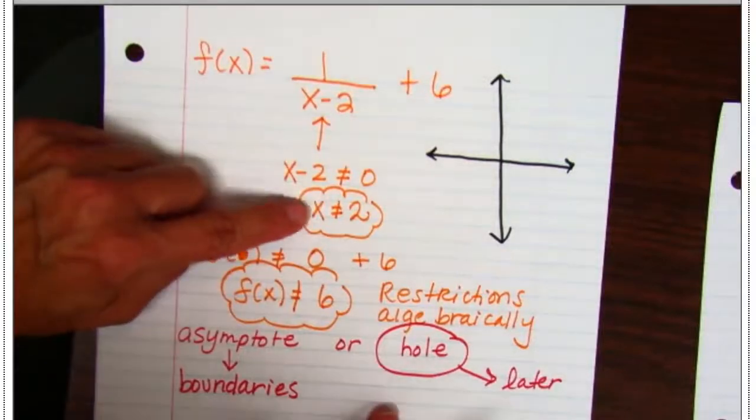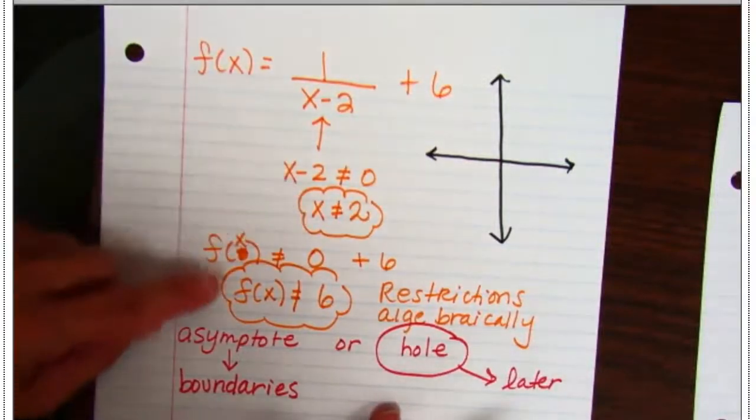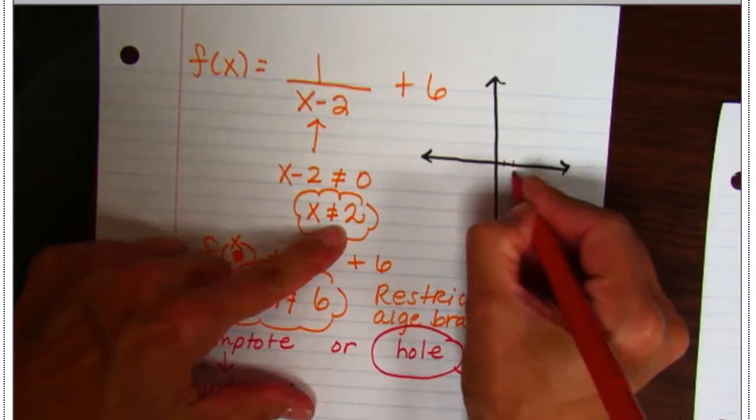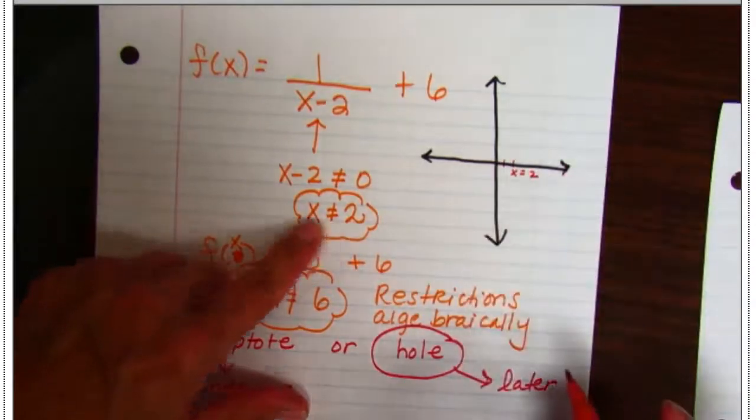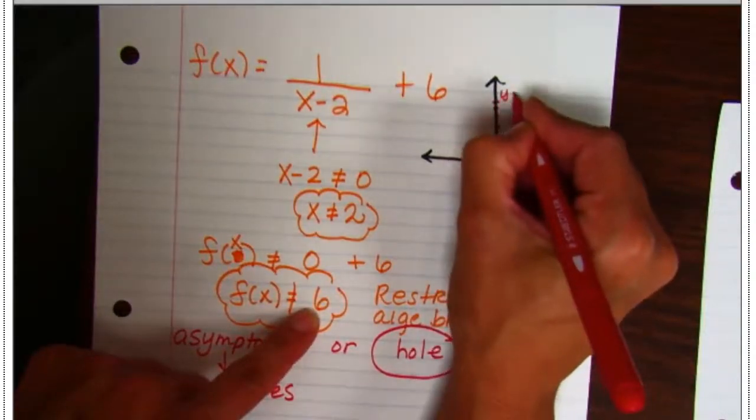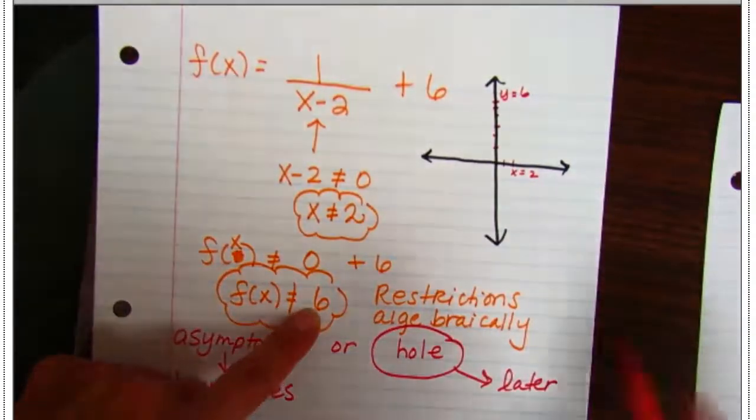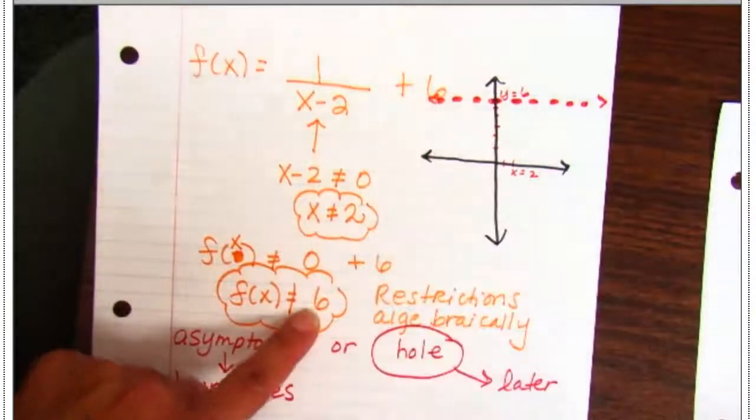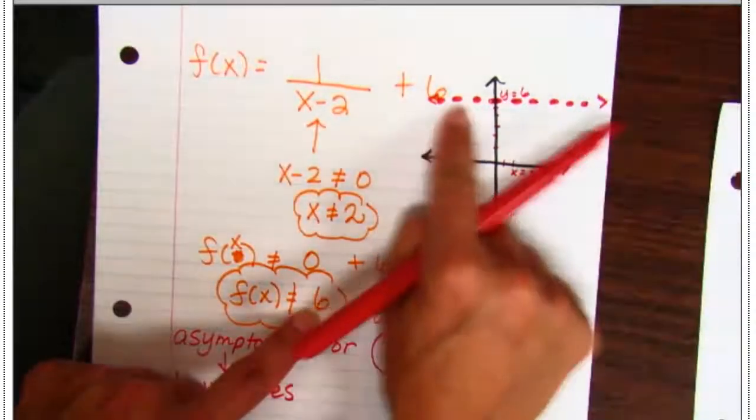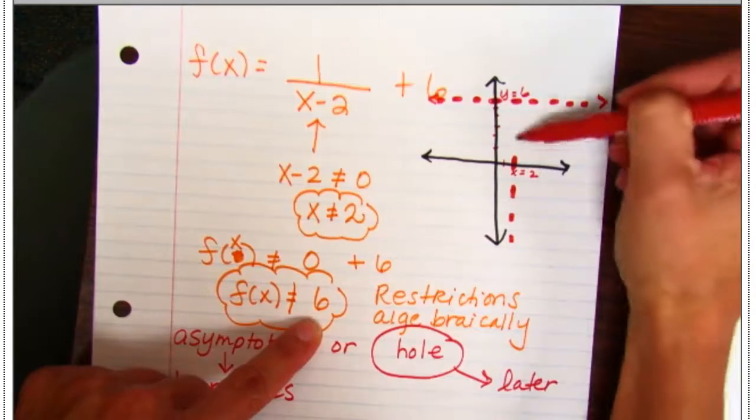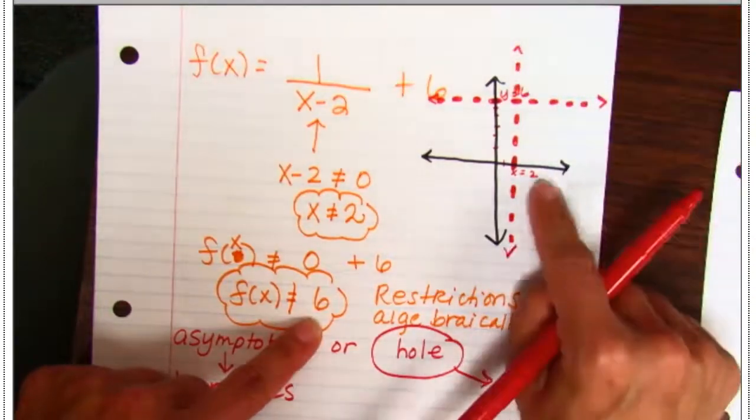So remember, we just said that x cannot equal a positive 2, and f of x or y cannot equal a positive 6. So let's say that x equals 2, that's like, let's say it's right here. And then y is never going to equal a positive 6. So that's going to be 1, 2, 3, 4, 5, 6. Here's where y equals 6. But remember, that's what they cannot equal. So an asymptote is a dotted line. When we graph it, it's a dashed line because it is a boundary. So I have a boundary right there at y equals 6. I have another boundary all the way up and down forever and ever and ever at x equals 2.